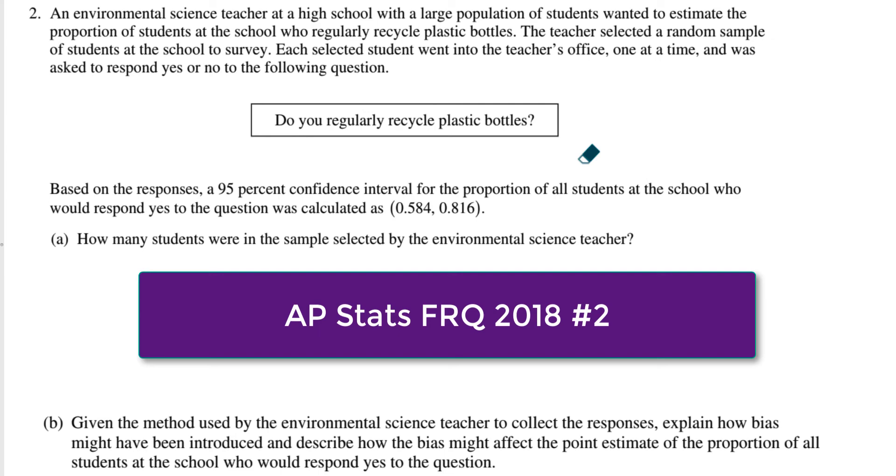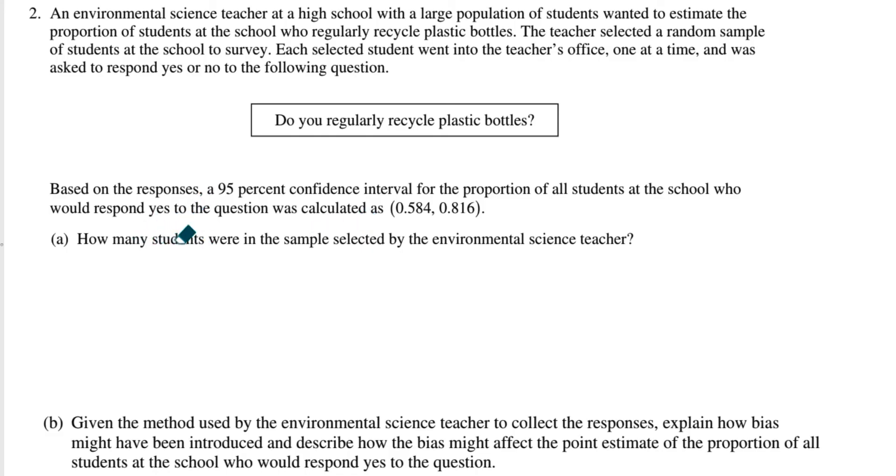Okay, what I'm going to do now is give you my interpretation of question number two from the 2018 AP Stats free response questions. Go ahead and pause the video. You can read the question if you haven't already. They've given you a confidence interval here, and they want you to solve for n, essentially. How many students? That's solving for n, and it is always the size of the sample.